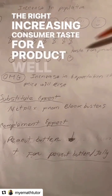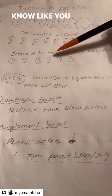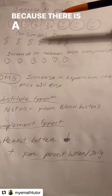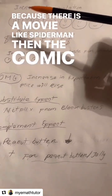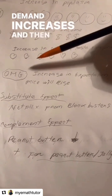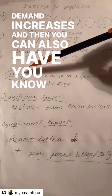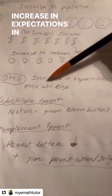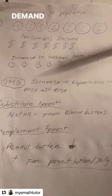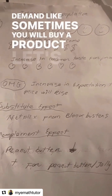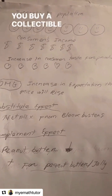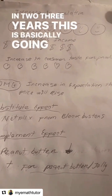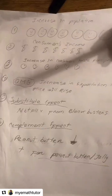Third: increasing consumer taste for a product. Like comic books — because there is a movie like Spider-Man, the demand for comic books increases. Fourth: increasing expectations in price. Sometimes you will buy a product — let's say a collectible — because you know that in two or three years this is basically going to increase in price.